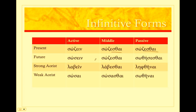In the future, these endings again are the same as the present. So sōsein — we've just got a different stem. Sōsesthai — there's our same ending as we had for the middle. But in the passive, remember the passive is formed from the sixth principal part. We take the future passive stem — our sixth principal part plus sigma — and then -esthai. So sōthēsesthai.